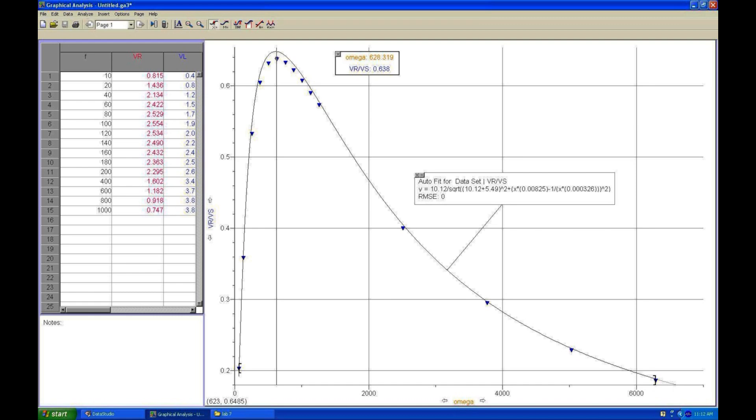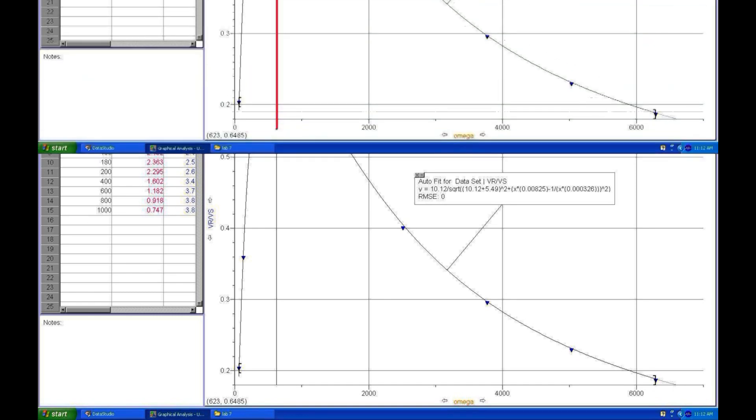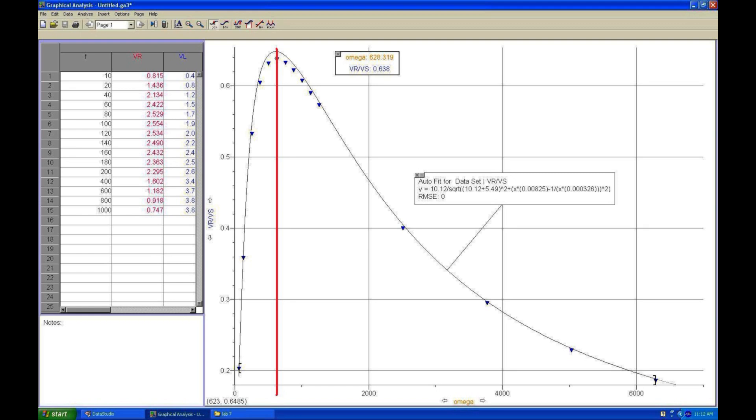The resistor voltage, and thus the current, shows a peak at the resonance frequency. Measure this frequency where the peak occurs and compare with 1 over the square root of LC.